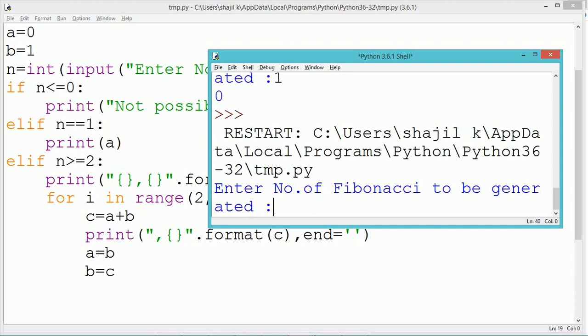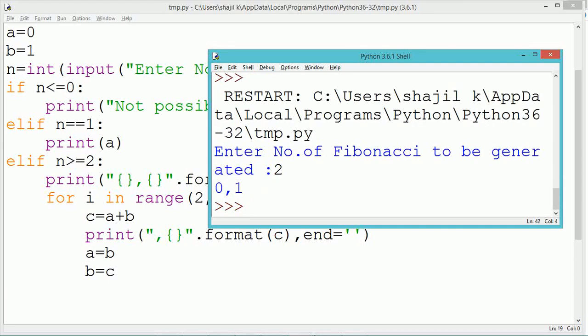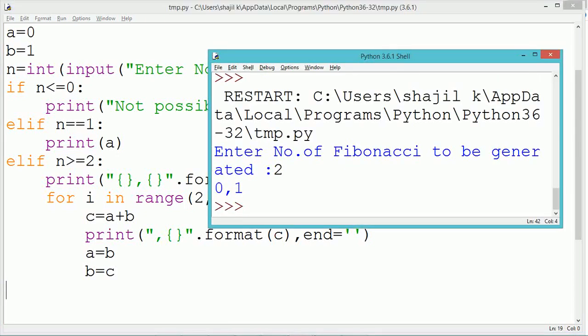The loop will get repeated 3 times because the range will take the value 2, 3 and 4. That means the for loop will get repeated 3 times.